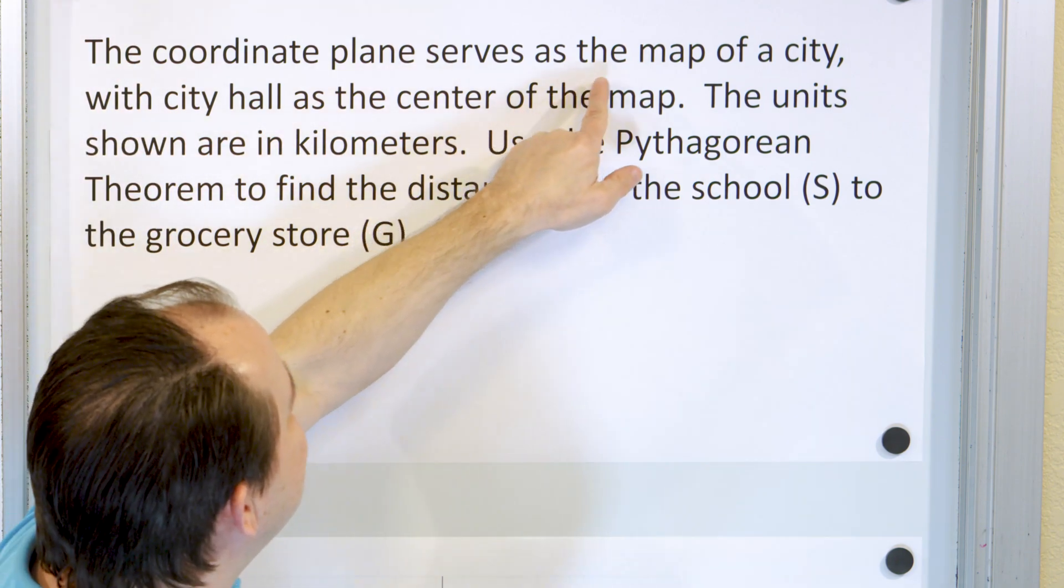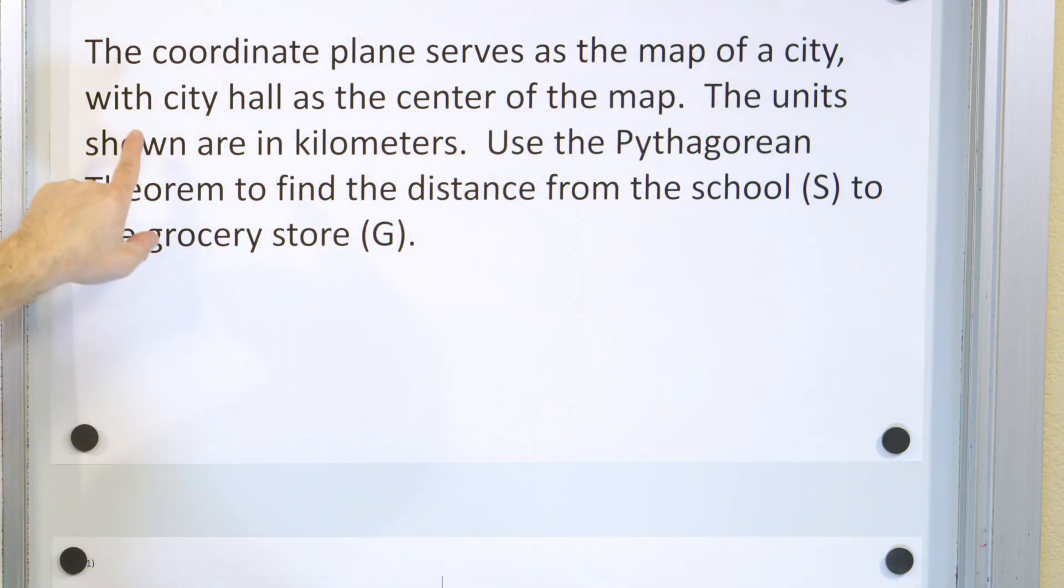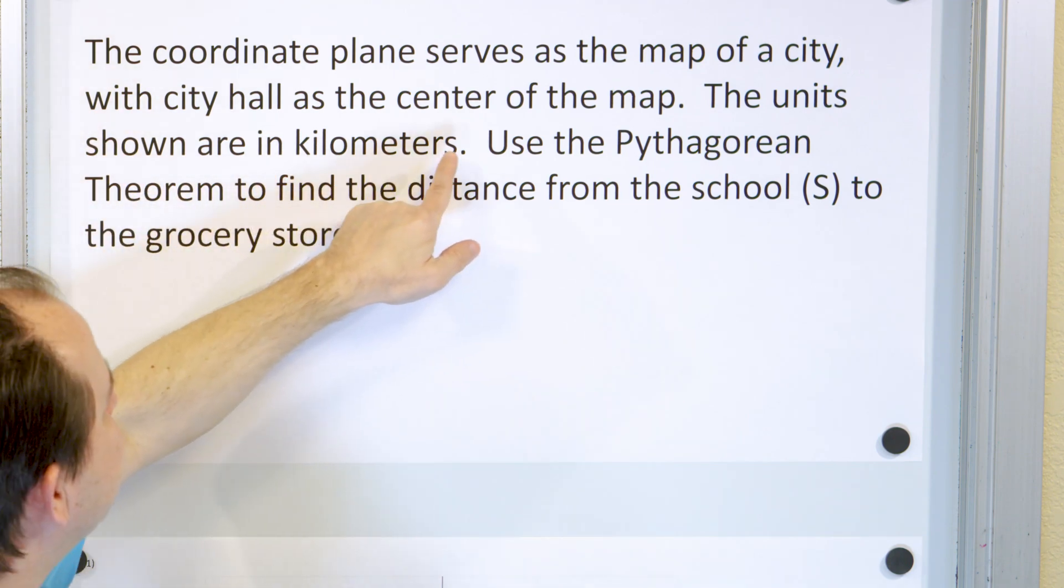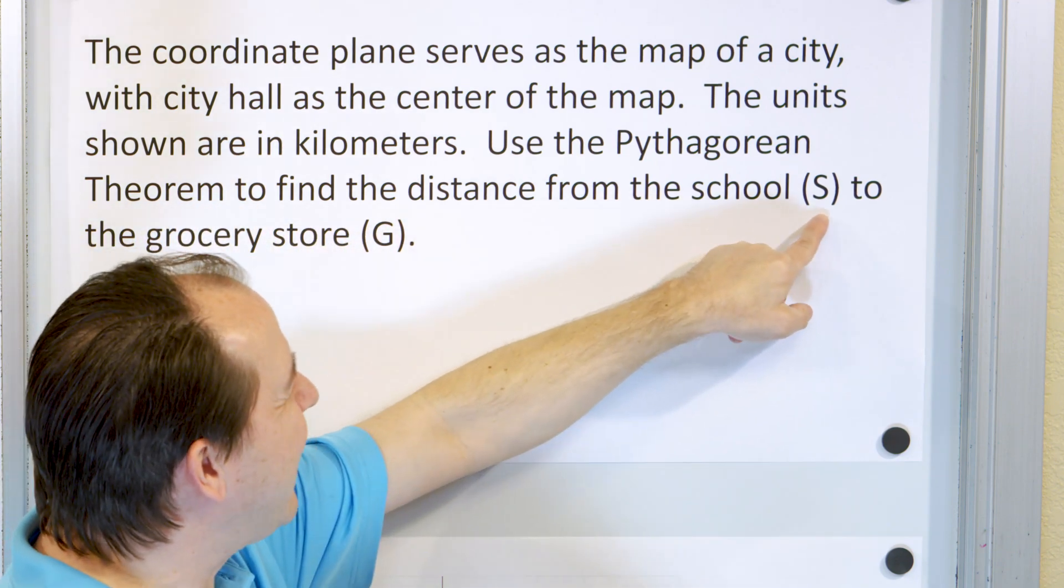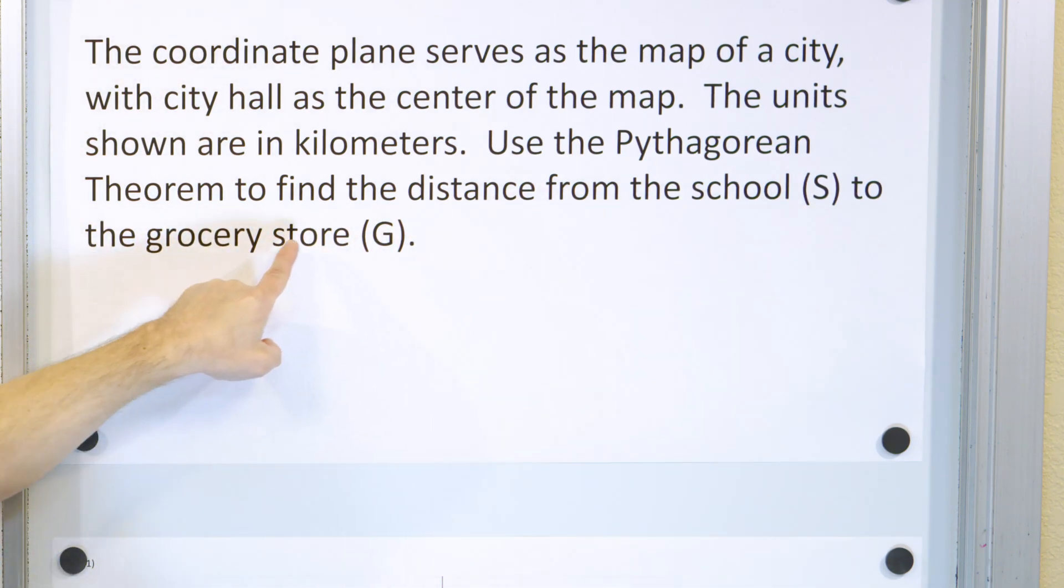The coordinate plane serves as a map of the city with city hall as the center of the map. The units shown are in kilometers. Use the Pythagorean theorem to find the distance from the school, S, to the grocery store, G.